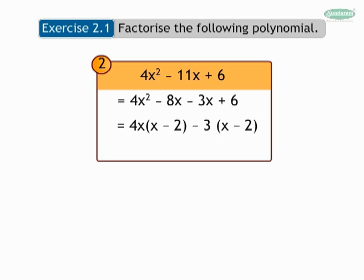Taking x minus 2 common from the whole expression, we get x minus 2 into 4x minus 3.